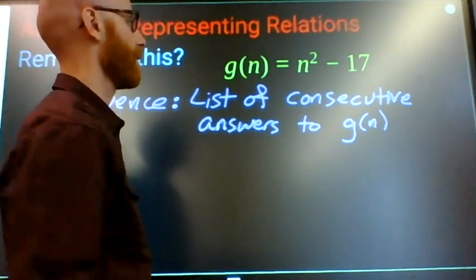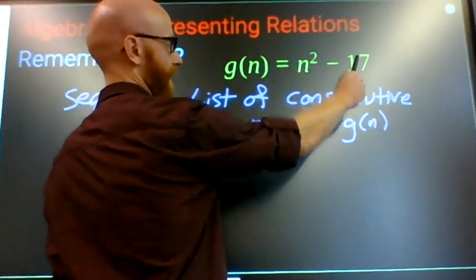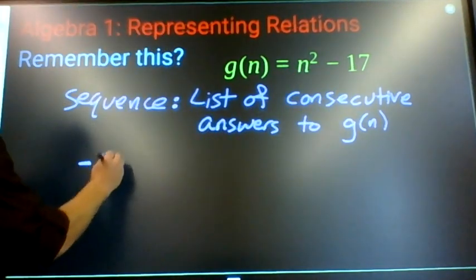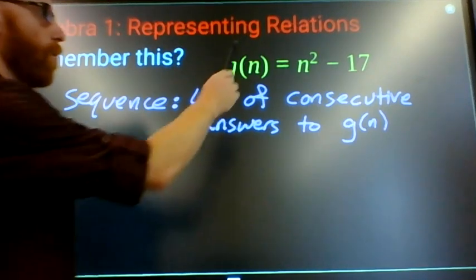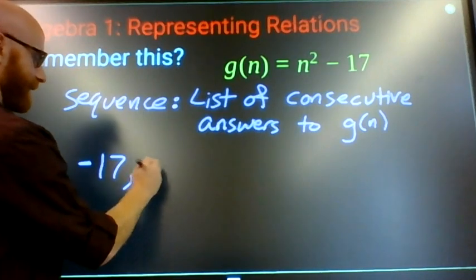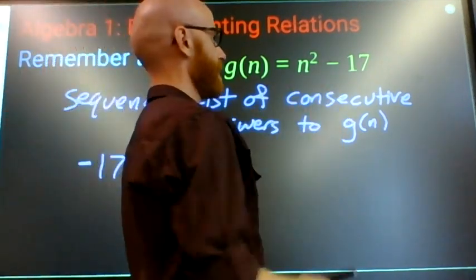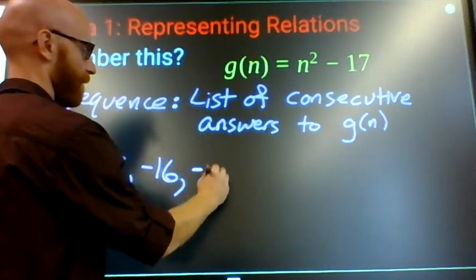For this one, I'm going to start with n equals zero. Zero squared minus 17 is negative 17. One squared minus 17 is negative 16. Two squared, four minus 17 is negative 13.